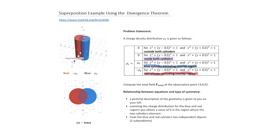Here's the example we're going to work with using the divergence theorem. There are two pictures: a perspective diagram and an xy trace — a cross-section looking at the xy plane downwards. We have an infinitely long cylinder intersecting with another infinitely long cylinder. The red cylinder has a uniform charge density of minus rho naught, and the blue has a uniform charge density of rho naught. The observation point is on the x-axis, and we want to compute the field at that location due to these two objects.